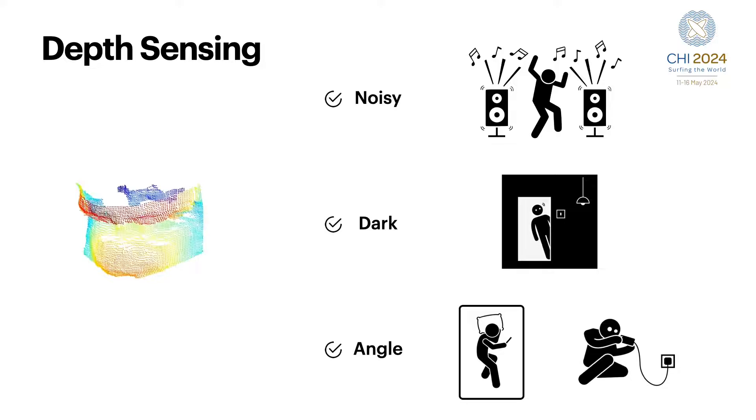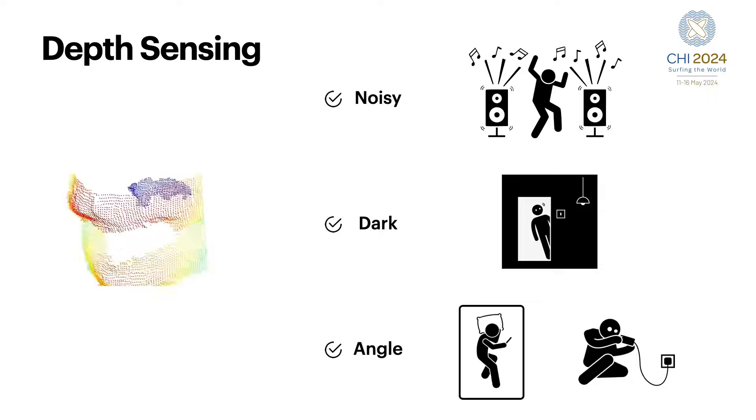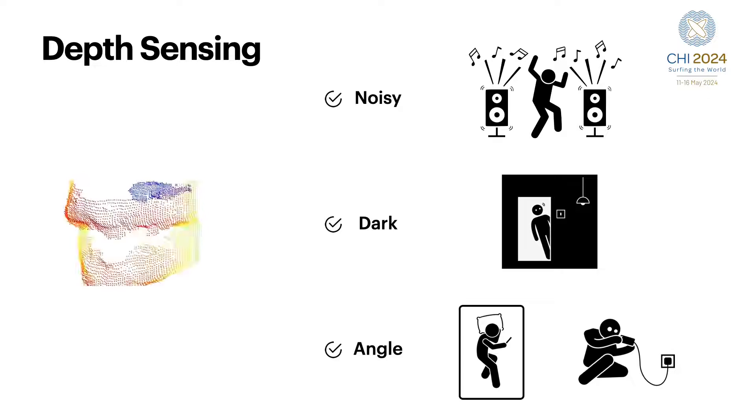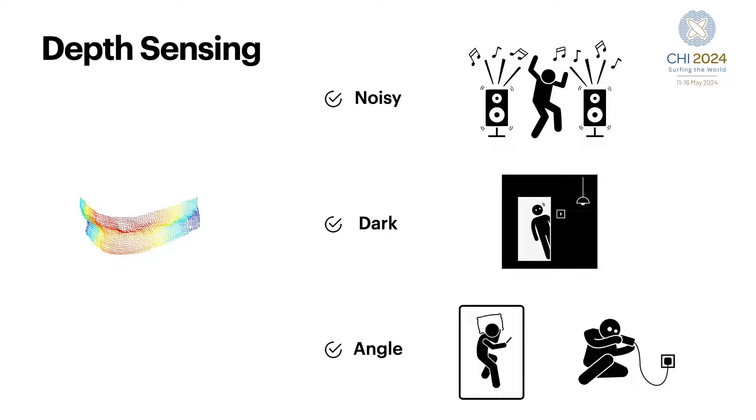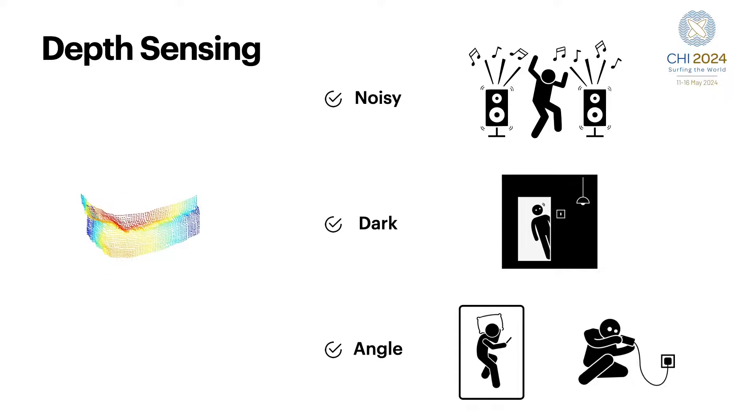To address these challenges, our work leverages depth sensing, which allows us to capture subtle mouth movements and gestures crucial for visual speech recognition. By incorporating depth information, we aim to overcome the limitations posed by noisy environments and varying lighting conditions. Besides, our approach can handle different angles and positions due to the rotational invariance of point clouds.